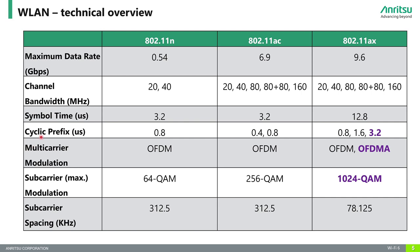On the left of this table we have different features of the N, AC, and AX standards. The first to compare is the maximum data rate — there was a big jump from N to AC, whereas from AC to AX the jump is not as large. The acronym for AC was 'very high throughput,' focused on enhancing data throughput, whereas the acronym for AX is 'high efficiency' — it takes the AC standard and makes it more efficient, with much better use of physical resources. There is no real difference in channel bandwidth between AX and AC.